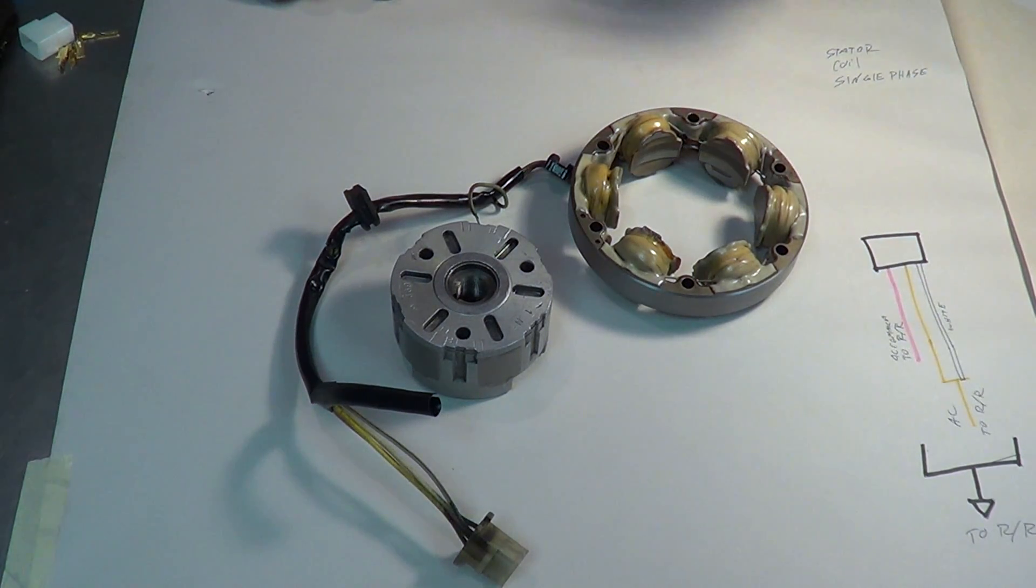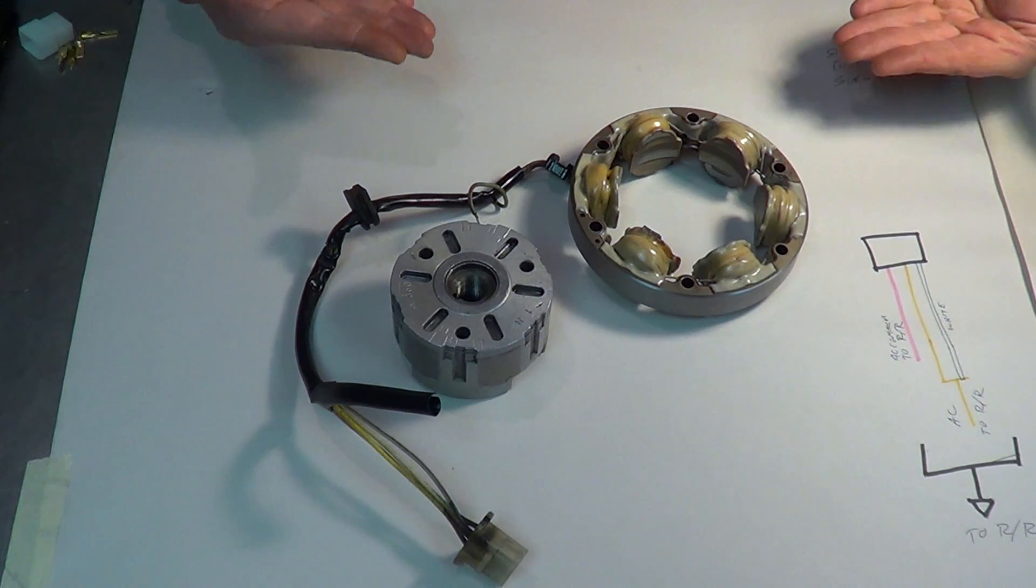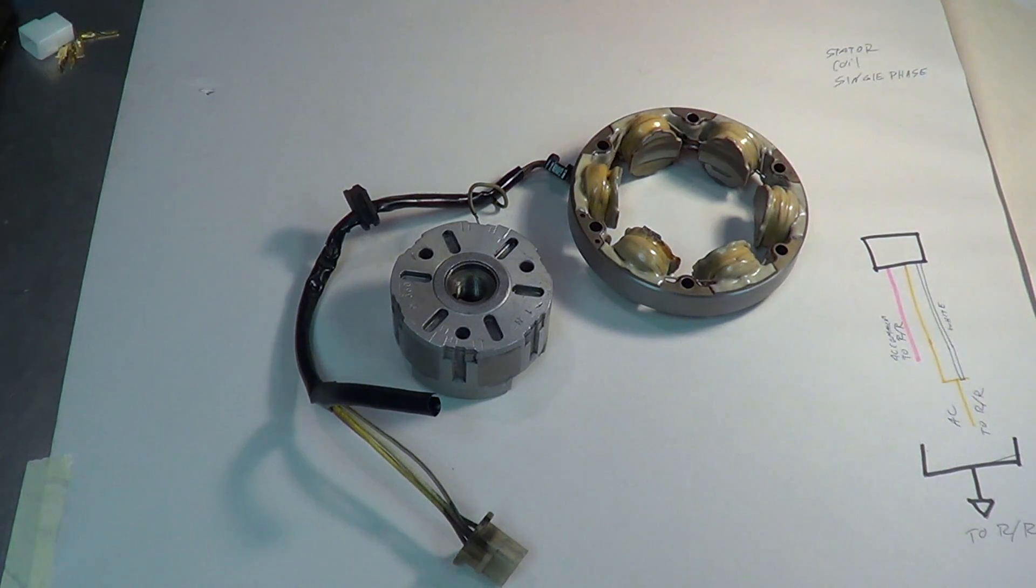When Honda specced these on the bikes a long time ago, they actually took this coil and they divided it into two halves. One half was running all the time. The other half was only designed to come on when the headlight kicked on. Well, we all ride with the headlight on, and we want to get the maximum charging out of the system because the power that this guy puts out is pretty anemic. Let's try to squeeze the most out of it we can. What we're going to do is we're going to try to combine both halves of the stator coil to make them be on all the time.